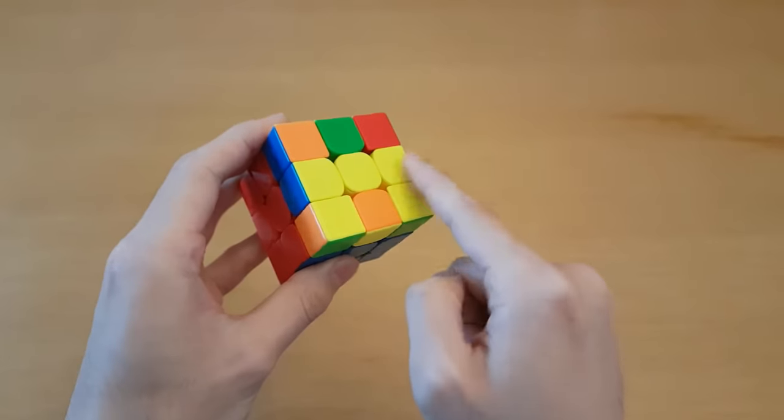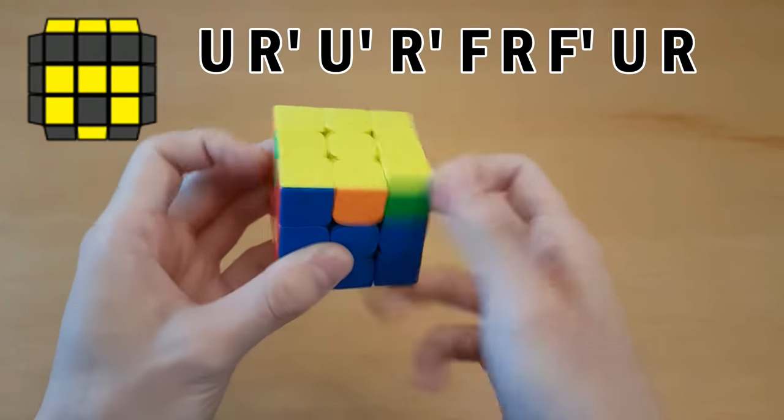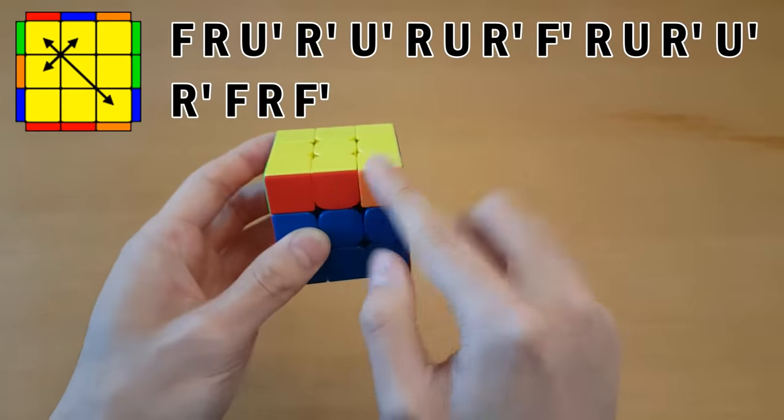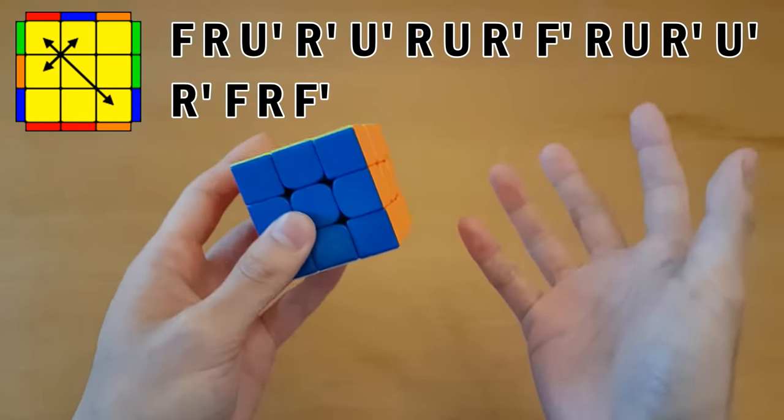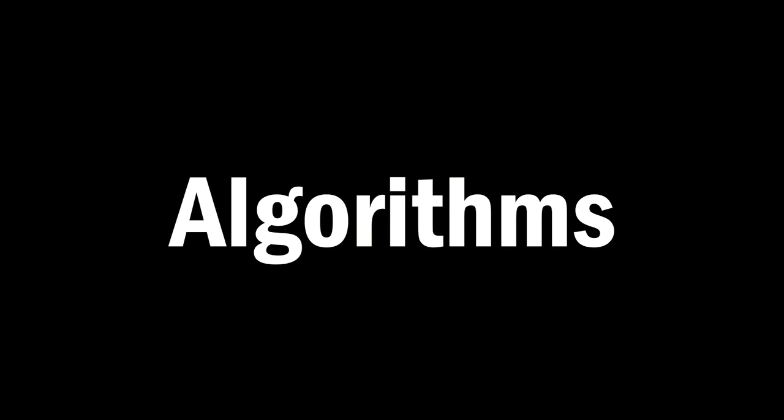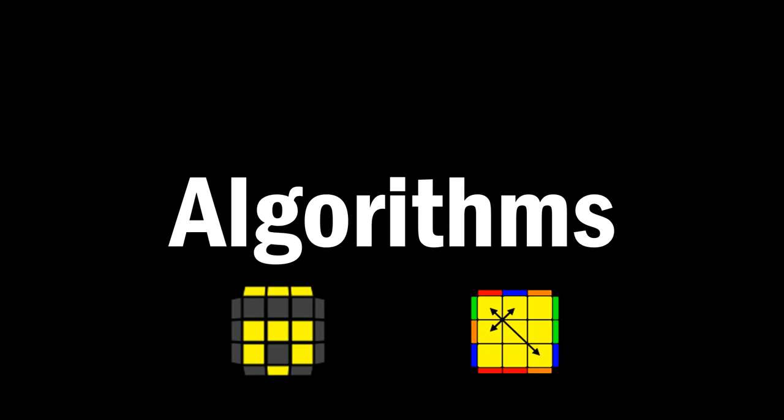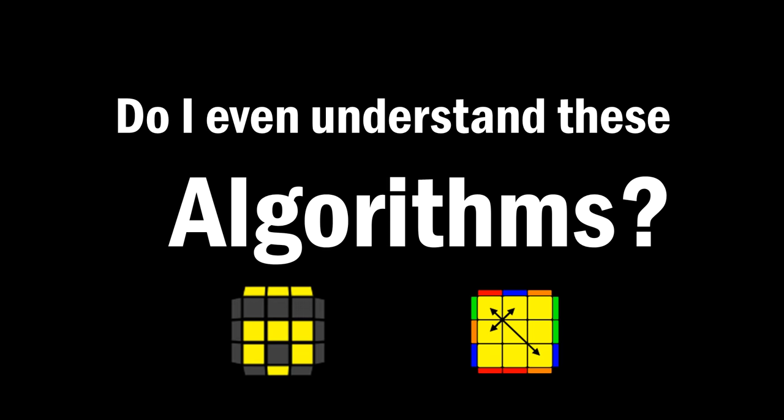But then on the last layer, I just see this pattern, and I know what to do. And then I see this pattern, and I do this. Those are just pre-memorized sequences of moves, or algorithms, that I've just done. But I've just memorized these. Do I even understand these algorithms?